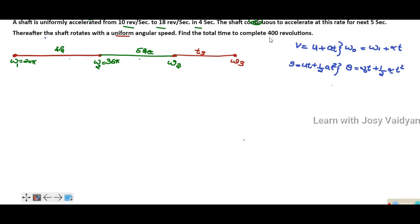We are asked to find the total time to complete 400 revolutions. We know the durations of Stage 1 (4 seconds) and Stage 2 (5 seconds). We need to find T3, the duration of Stage 3, using the total revolution count of 400.